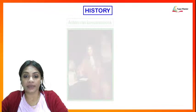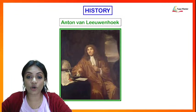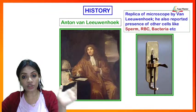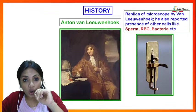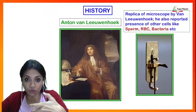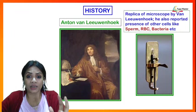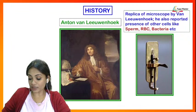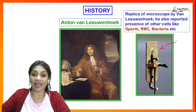Another scientist, Anton van Leeuwenhoek, created a replica of the first microscope made by Robert Hooke. He also found and reported the existence of other cells — cells found in our body — for example, the sperm, the RBC, and even bacteria. He reported these by viewing through his own compound microscope, which he created.